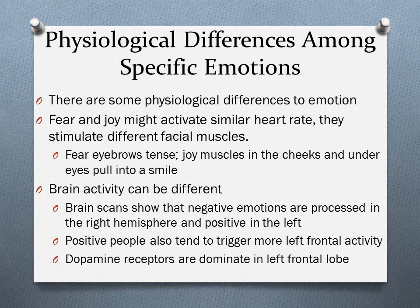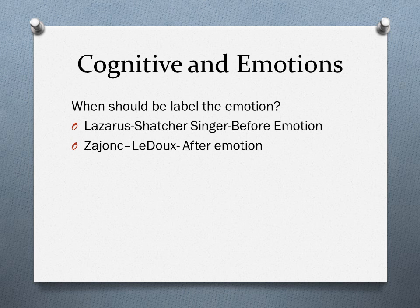To review cognitive labeling and emotion: there were two camps going back and forth about when we should label our emotions. Lazarus and Schachter-Singer say we label it — even if the event takes place for a brief second, we appraise it and then have the emotion. Zajonc and LeDoux say you see the event, experience the emotion, and then label it afterward.